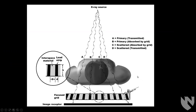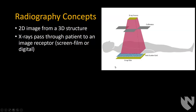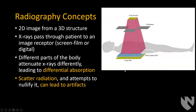All x-ray studies, radiography studies, work on the basic principle that you have an x-ray source. The source shoots x-ray beams through the patient. Some of those beams will be attenuated, and some will go through the patient and reach an x-ray detector. There might be a collimator or a grid in between that helps reduce scatter, but you may also not have that. You're basically making a 2D image from a 3D structure. The x-rays pass through the patient to an image receptor, which can be screen film or digital.